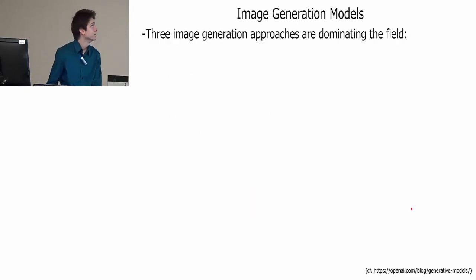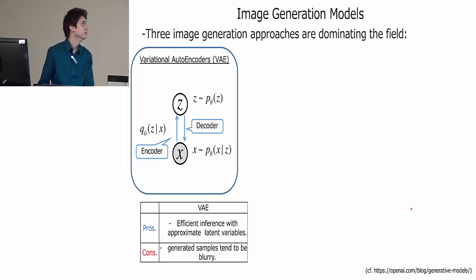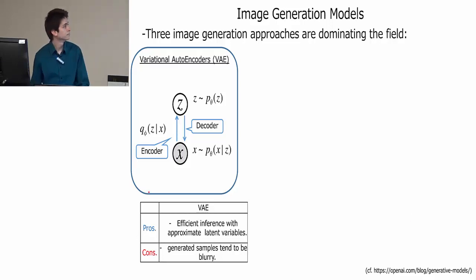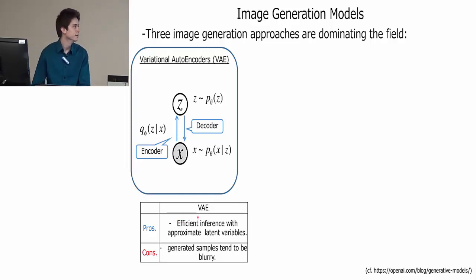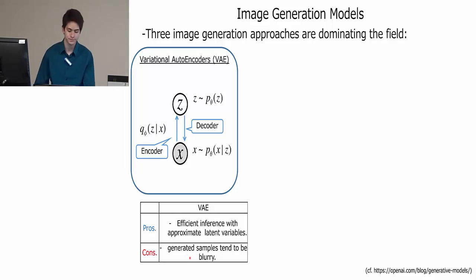There are three image generation approaches that are really popular right now. The first one being variational autoencoders, which use a latent vector Z to encode and decode the images. VAEs are good at efficient inference, which just means they generate images quickly and efficiently. Unfortunately, the generated samples end up being blurrier than other models.